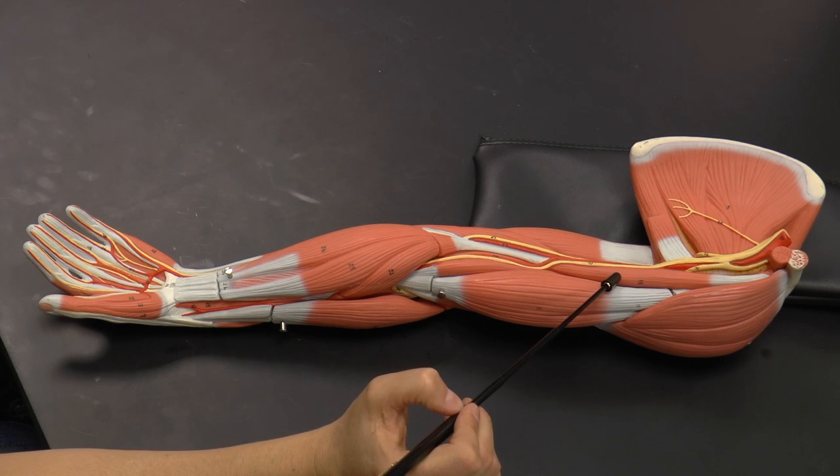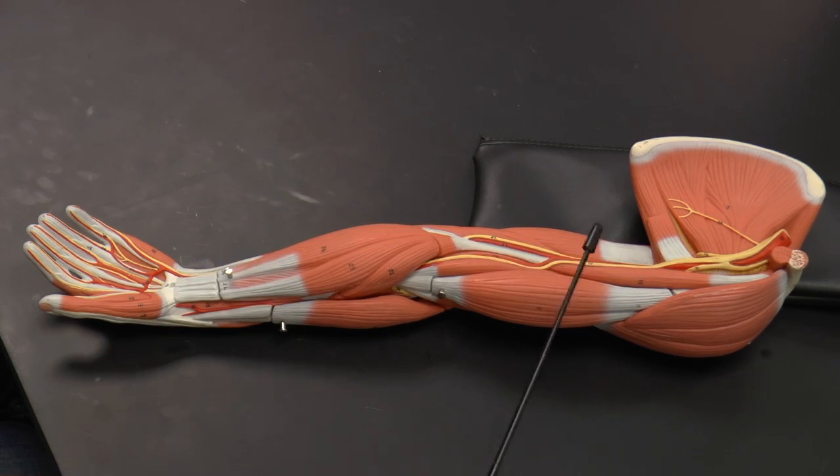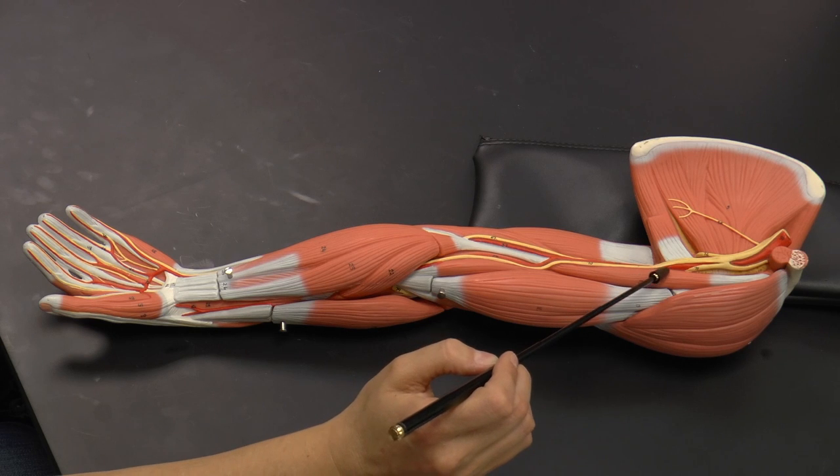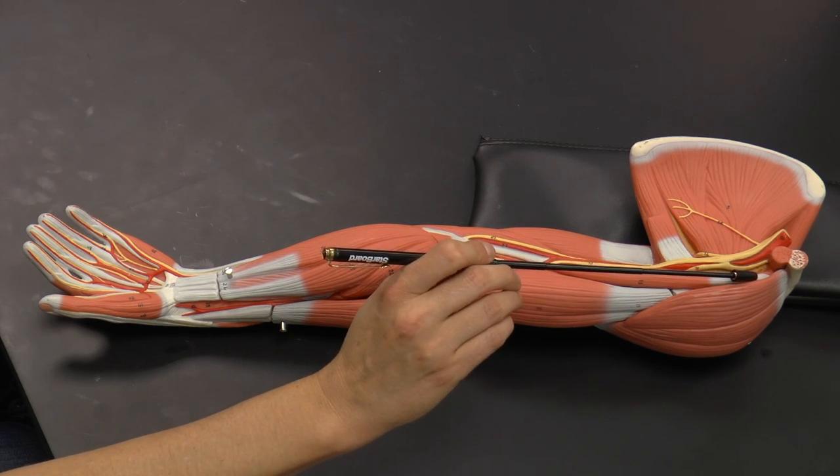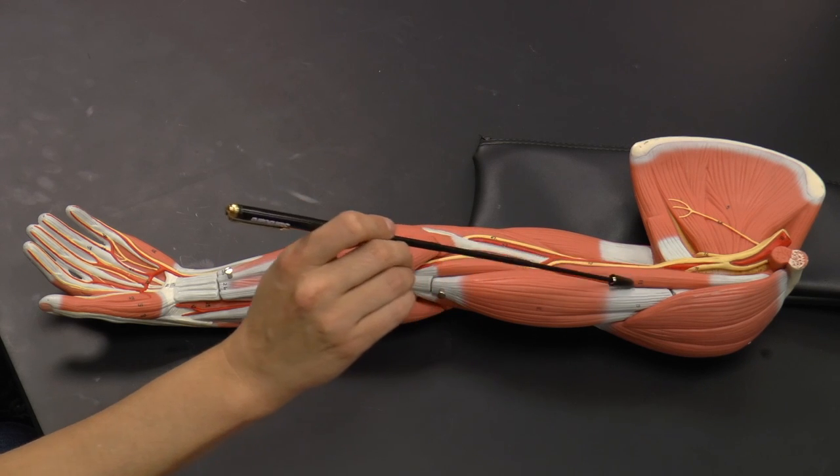Here's a muscle called the coracobrachialis. Brachialis refers to the brachium, which is another name for the humerus, for the upper arm. Coracobrachialis attaches to the coracoid process of the scapula and also to the humerus, to the brachium.